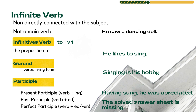Infinite verbs are divided into three subcategories. First is infinitive verb, which means that verb is used with the preposition 'to.' For example: 'He likes to sing' — the word 'sing' is used with 'to.' When you read 'to sing,' that phrase is the infinitive in the sentence.